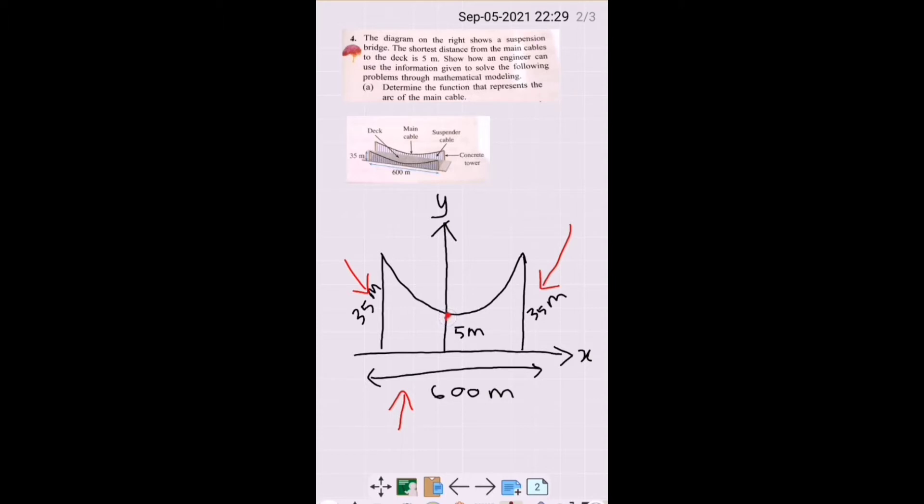So what we are going to do now is we are going to divide 600 with 2 and we get 300. Over here is also 300. So we have negative 300, 35 and positive 300, 35. Why negative? Because we assume to the left is negative, to the right is positive. And here we have 0, 5. So this is our diagram.